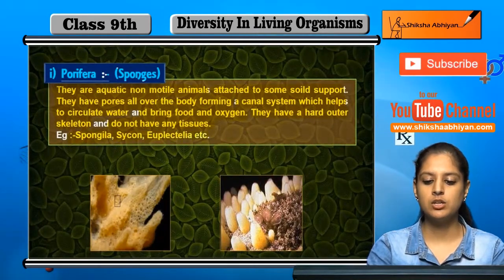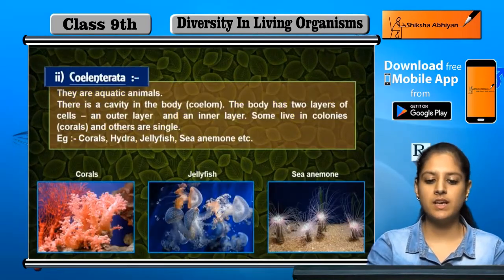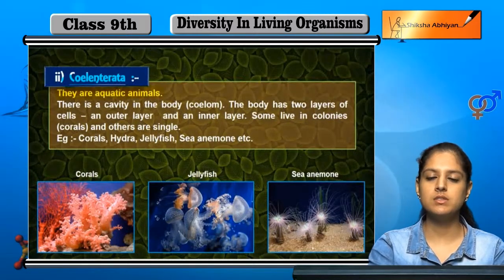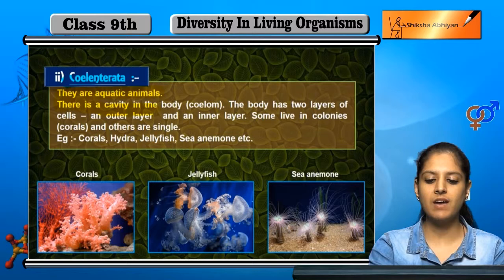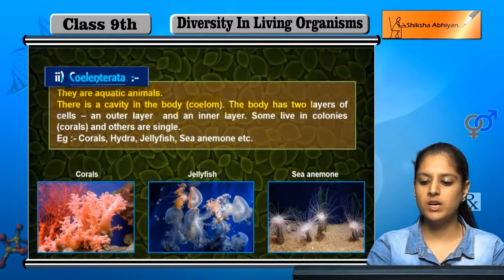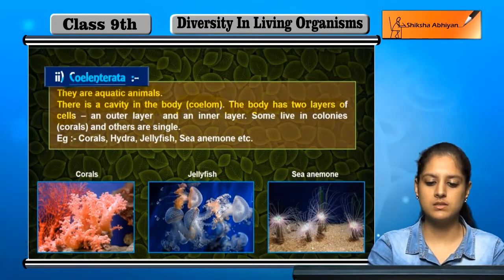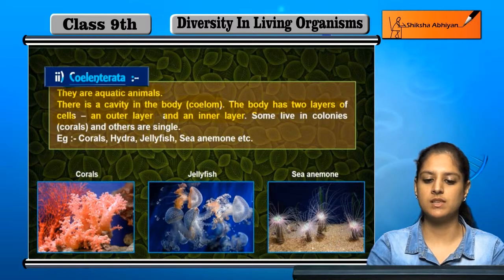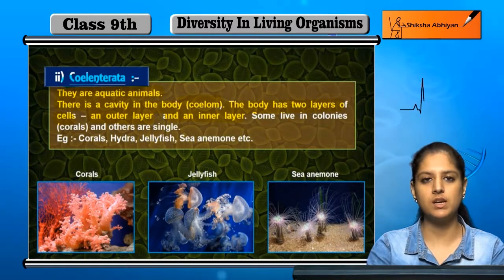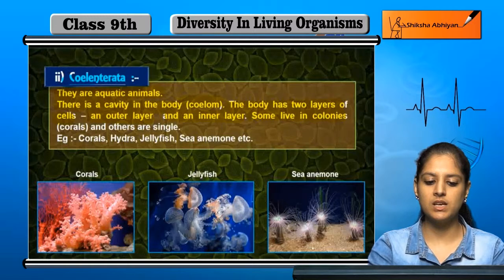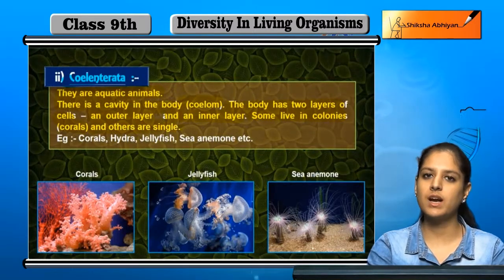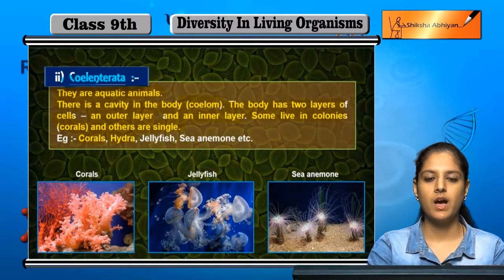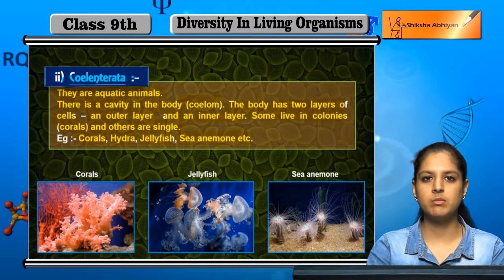Next is Coelentrata. They are aquatic animals with a cavity in the body. Their body has two layers of cells: an outer layer and an inner layer. Some live in colonies which form corals, and some live alone. Examples are corals, Hydra, jellyfish, sea anemone, etc.